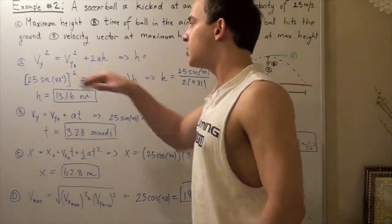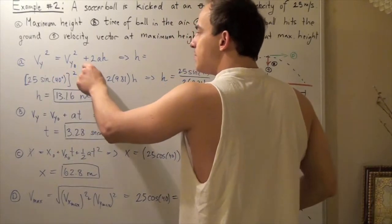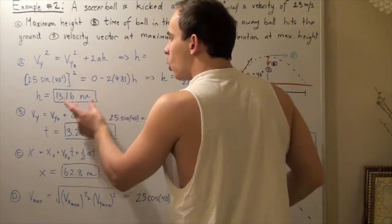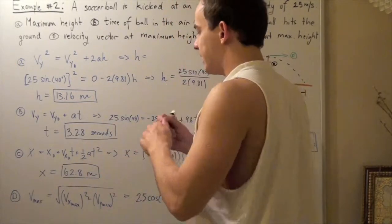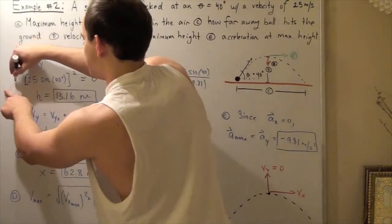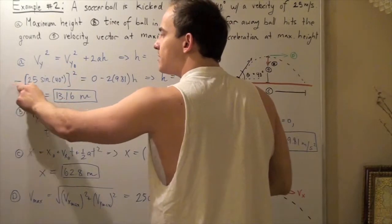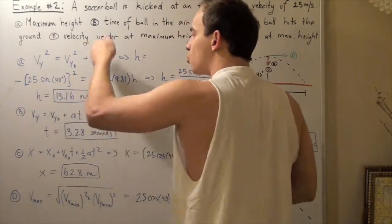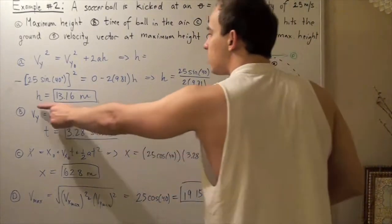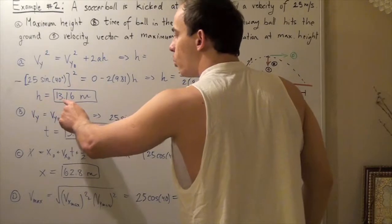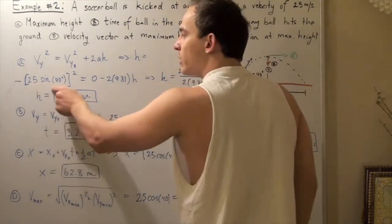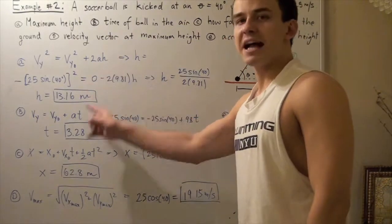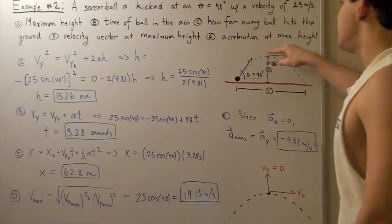Plugging in the values: the final velocity term becomes zero, and we have negative 2 times 9.81 m/s². Bringing terms across — note the negatives cancel — and solving, we get a maximum vertical height of 13.61 meters. This is the maximum vertical distance our soccer ball travels before beginning its descent.